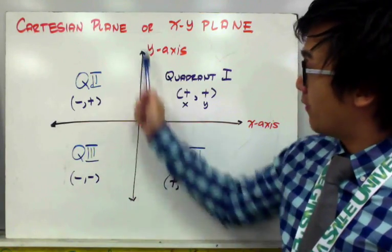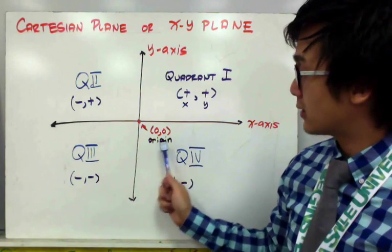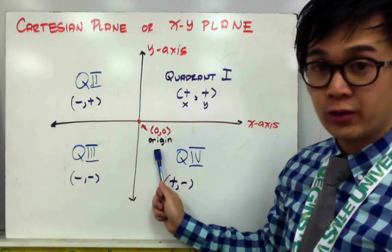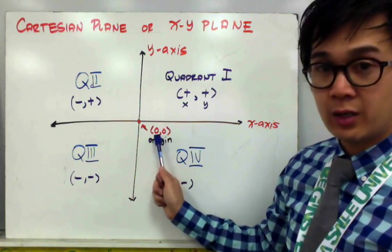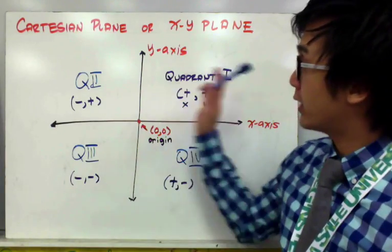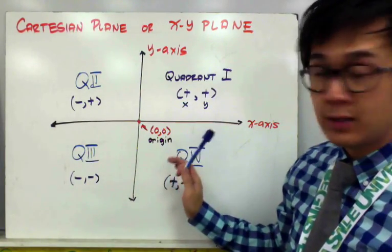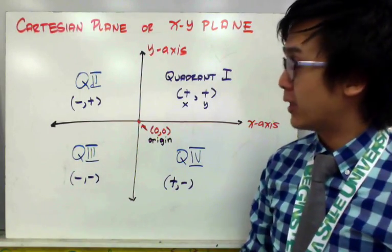The center of our x-y plane where the x-axis and the y-axis intersect is what we call the origin or the point of origin, which has an ordered pair of (0,0). Let's have some examples on how we use our Cartesian plane, or x-y plane, in plotting points given the ordered pairs in a problem.